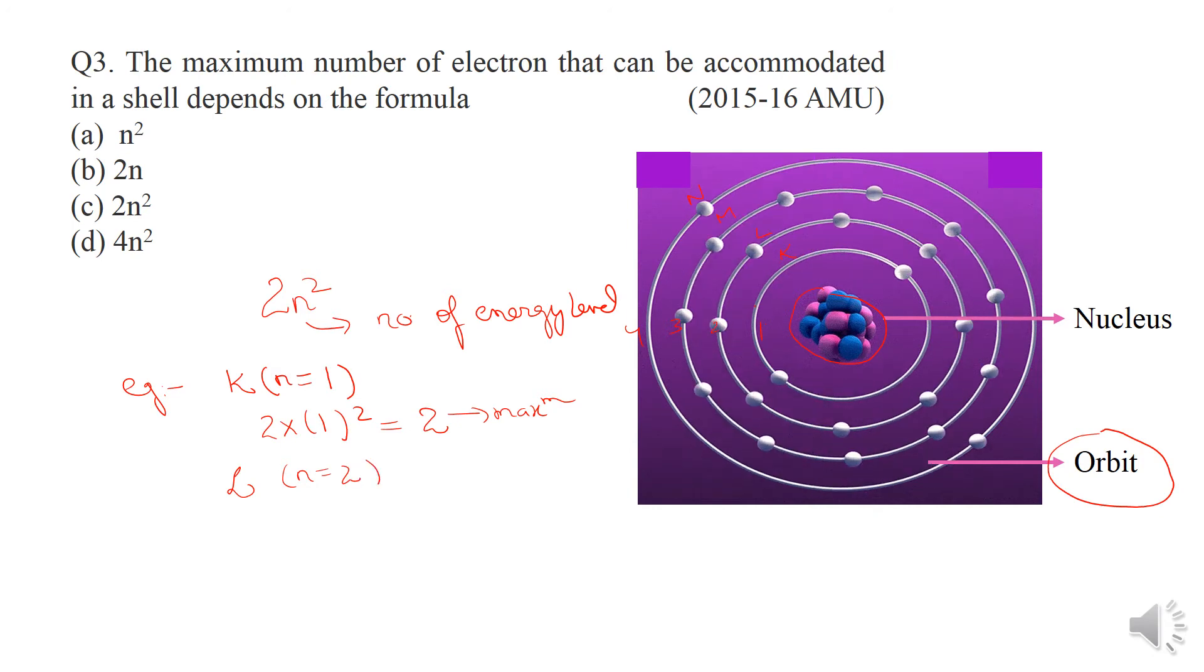So K shell maximum number of electrons can be 2. Similarly for L, n is 2 because it is 2nd shell. If we put it in 2n square, 2 squared is 4 and 4 into 2 is 8.